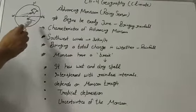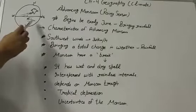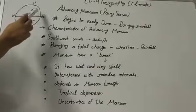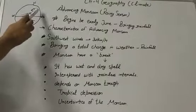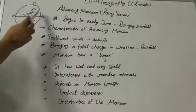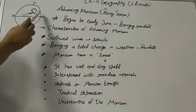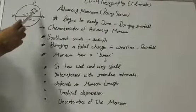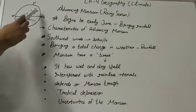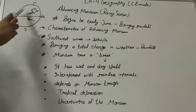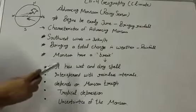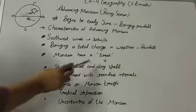The Deccan Plateau and parts of Madhya Pradesh also receive some amounts of rain. The maximum rainfall of this season is received in the north-eastern part of the country. Mawsynram, in the southern rails of the Khasi Hills, receives the highest average rainfall in the world.